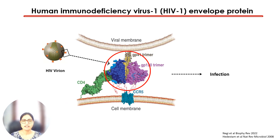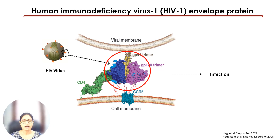This slide shows the HIV envelope glycoprotein circled in red, which is the only protein exposed on the surface of the virus and is the main target for vaccine development. The envelope interacts with host receptor CD4 or the chemokine receptor CXCR4, or in this case CCR5 is shown, to initiate the infection.